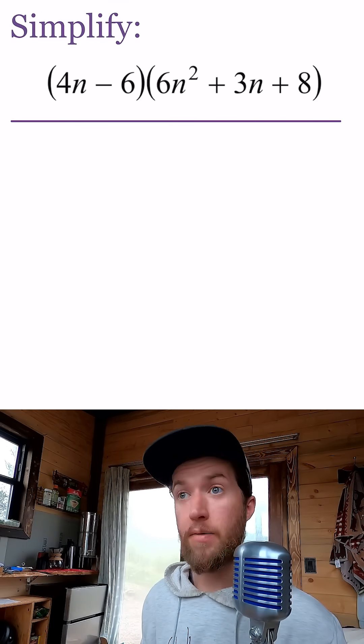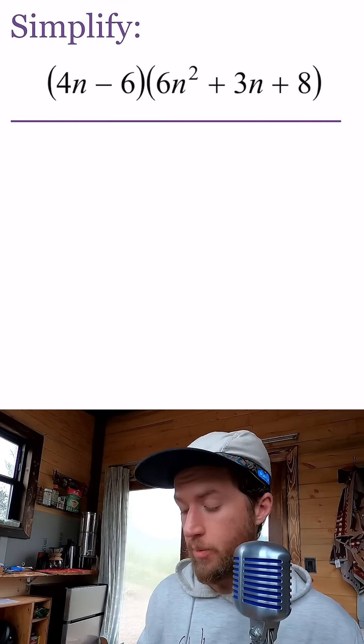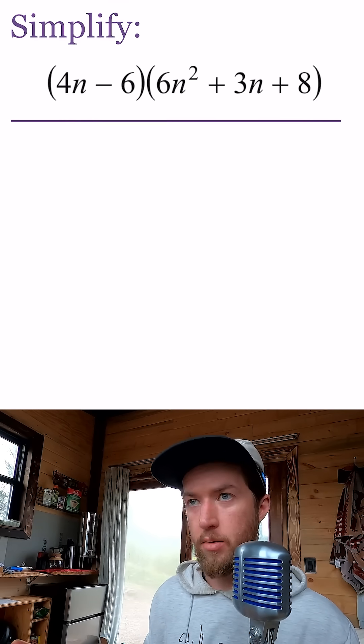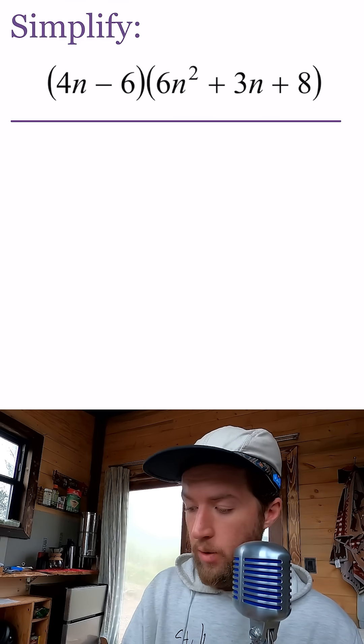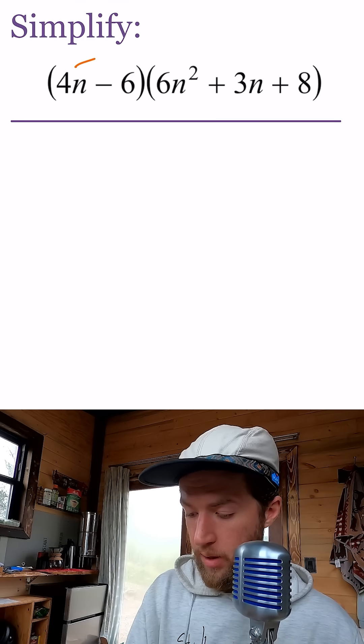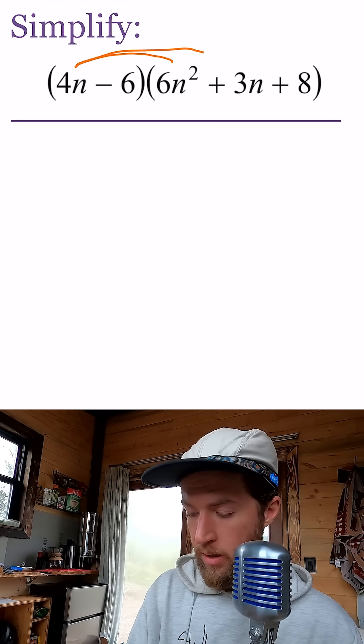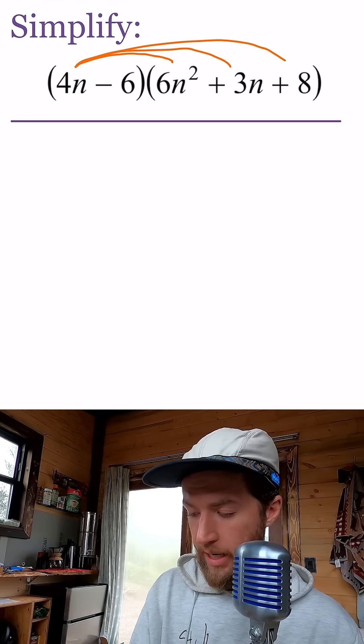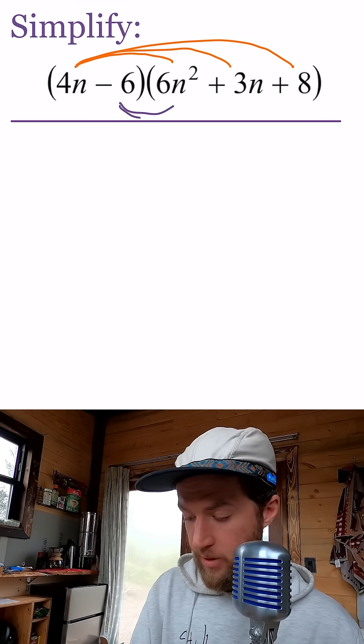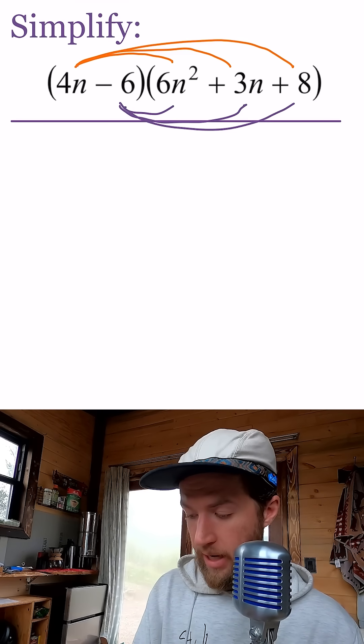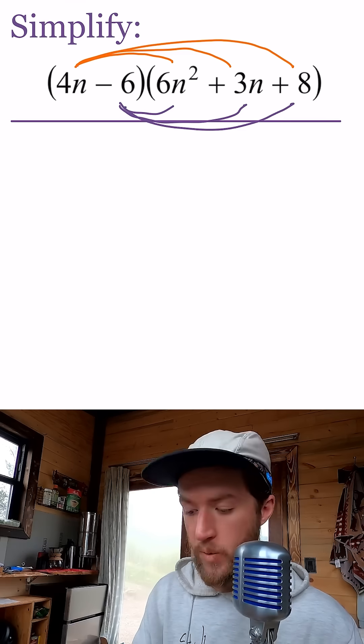All right, we have another FOIL-style problem, but it's not just two terms in both parentheses—there's three terms over here. So what do we do? Well, we're going to take 4n and multiply it to 6n², 3n, and 8. Then we're also going to take negative 6 and multiply it to 6n², 3n, and 8. There's going to be six terms, but we'll just start adding them all together.